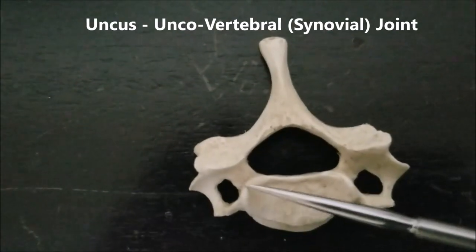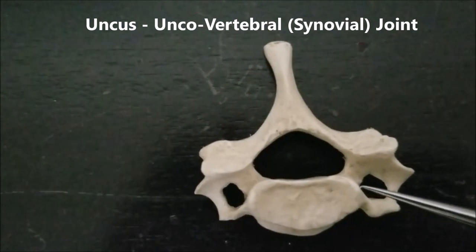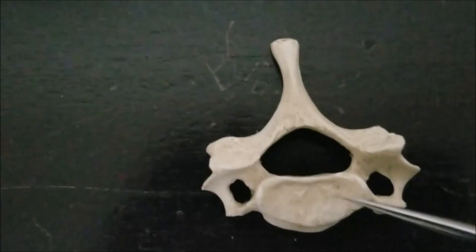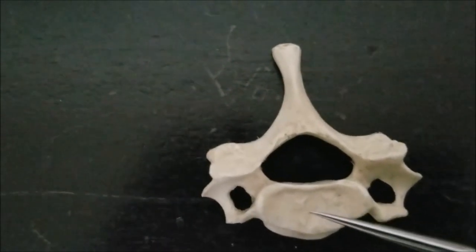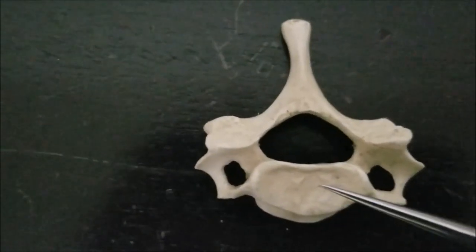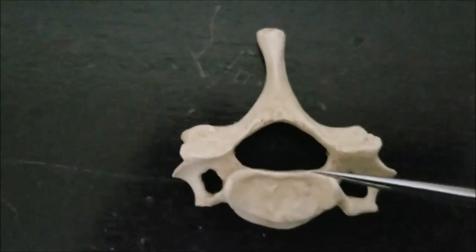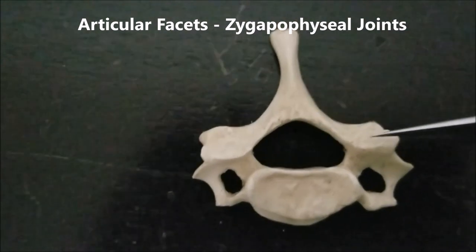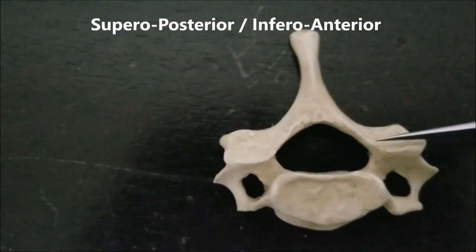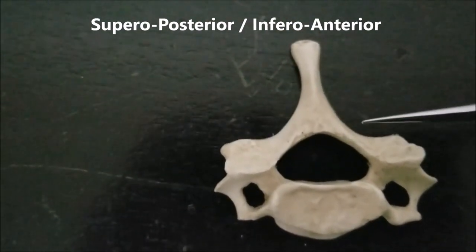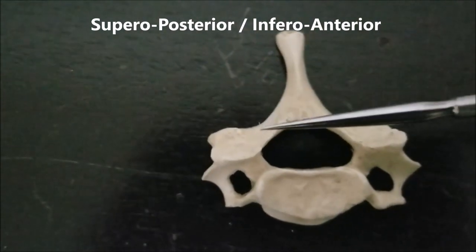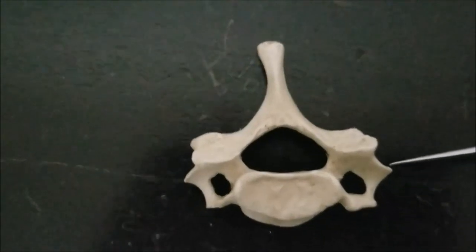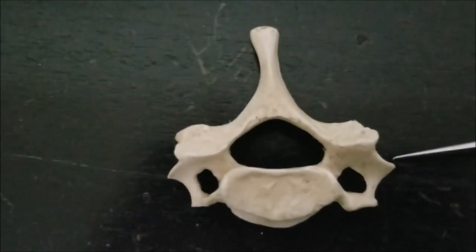The uncus forms what is known as the unco-vertebral joint — a synovial joint located posterolateral to the fibrocartilaginous joint formed by the intervertebral disc. This is one of the reasons why the cervical vertebra is so mobile. The articular facets of the cervical vertebrae are also notable: the superior articular facets are directed superoposteriorly, and the inferior articular facets are directed inferoanteriorly. Because of this unique articulation, the cervical region is exceptionally mobile.